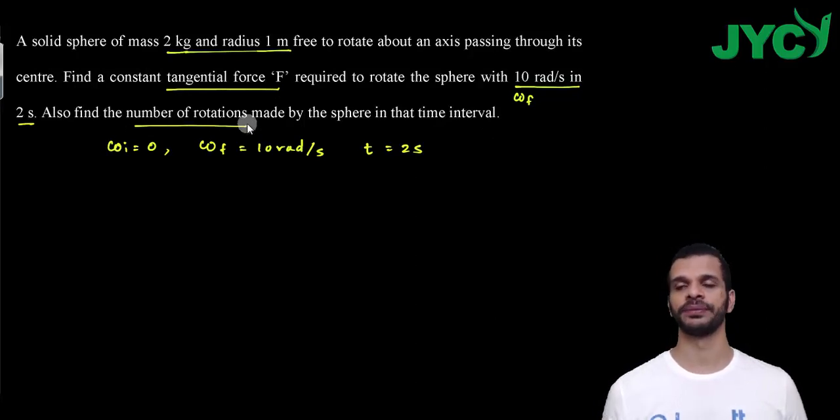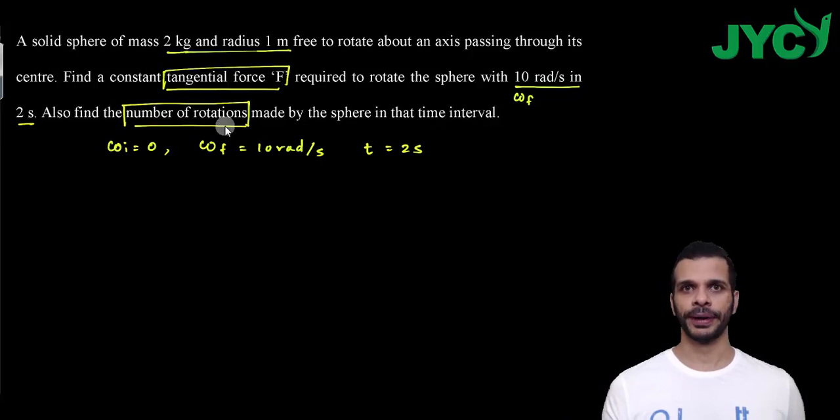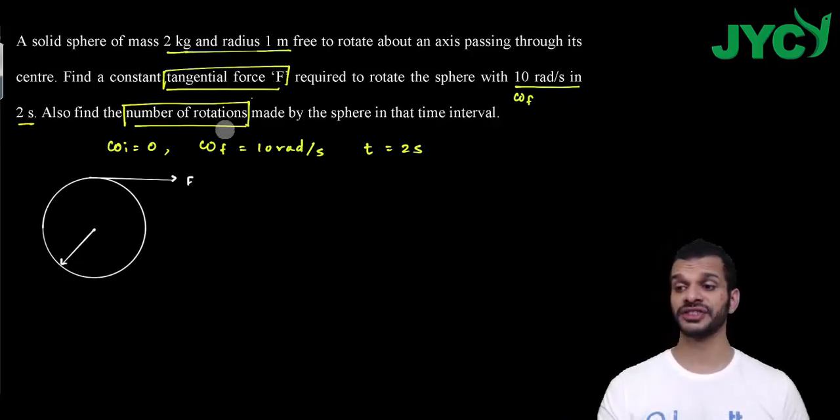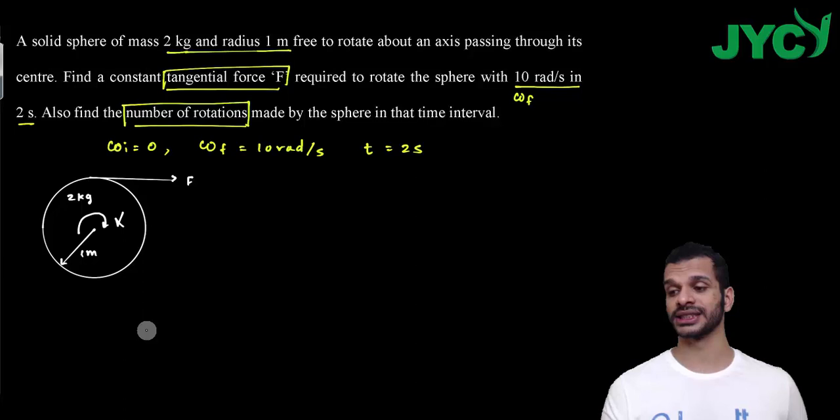So these are two things. First of all I have to draw the sphere. Now this sphere mass is 2 kg and radius is 1 meter. So this information is given, and constant tangential force is applied to this sphere and this sphere will have angular acceleration alpha.